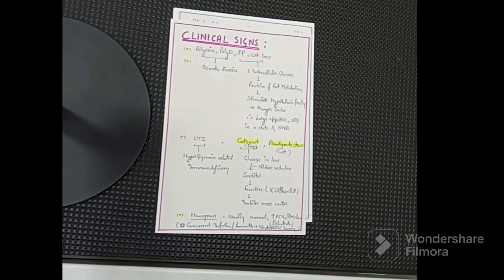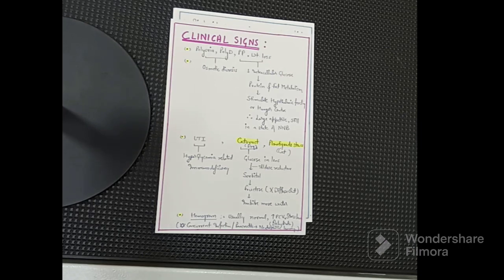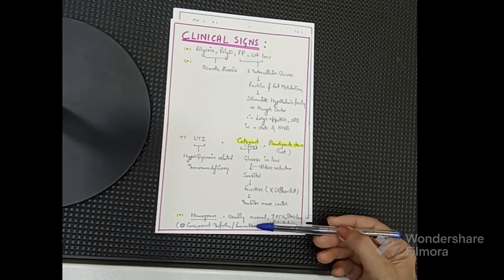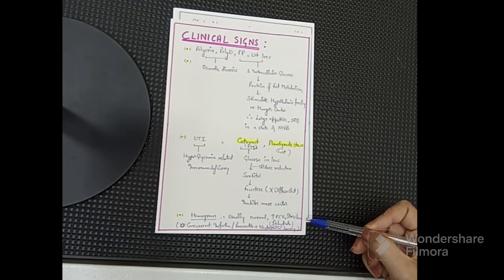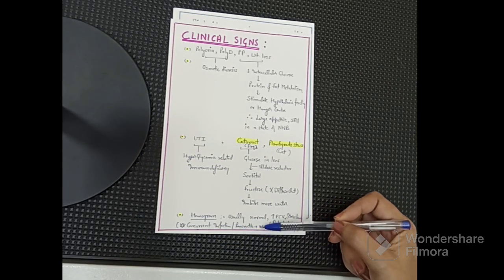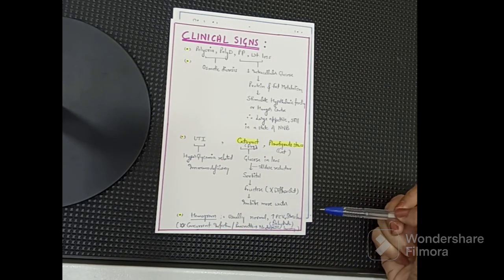Another important sign to know for NAVLE is plantigrade stance in cats — this is one of the most common signs in cats suffering from diabetes mellitus. Regarding the hemogram, it may be usually normal, but because of dehydration you can see elevated PCV and a stress leukogram. If there is concurrent infection or pancreatitis, neutrophilic leukocytosis may also be expected.